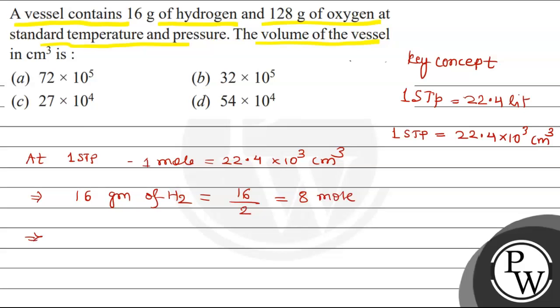Similarly, we are given 128 grams of oxygen. We convert this: 128 divided by 32 equals 4 moles.